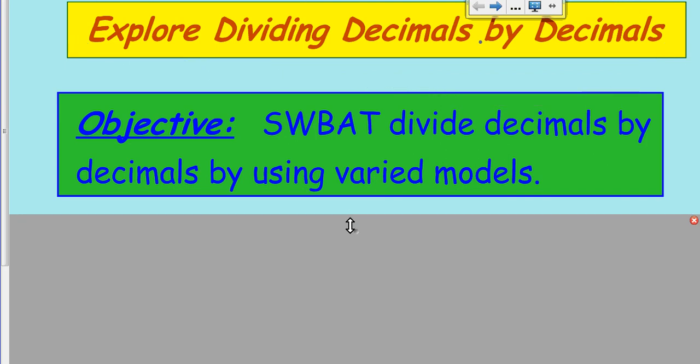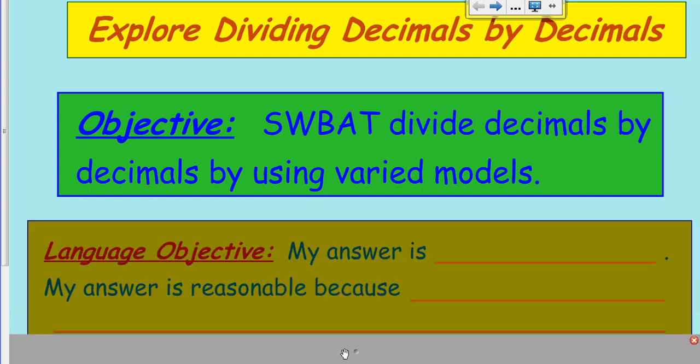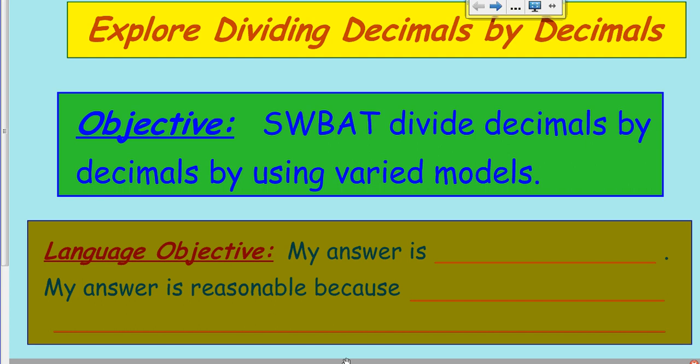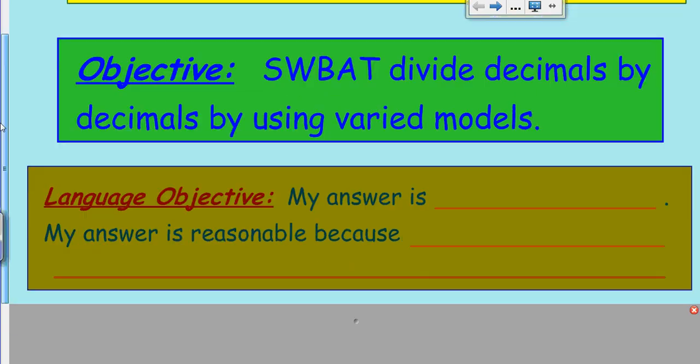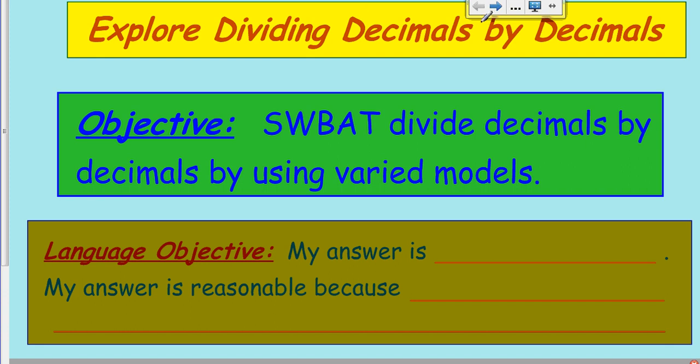Here's our objective today. Students will be able to divide decimals by decimals by using varied models. Today we're going to basically be using a 10 by 10 grid. One of the key standards in Common Core is that you understand that when you do a particular math problem, you be able to show some kind of model. We have a language objective: my answer is blank, and my answer is reasonable because.